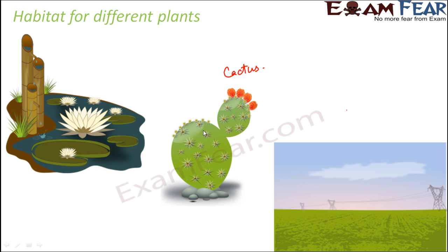Since cactus do not have leaves, they do not lose a lot of water. We have learned in previous lessons that in the leaves there are tiny pores called stomata, and through stomata the plants tend to lose water. In cactus, the stomata is reduced, the leaves are modified to spines, and therefore they can survive with less water. In deserts we have less water, and therefore plants like cactus survive very well in the desert.